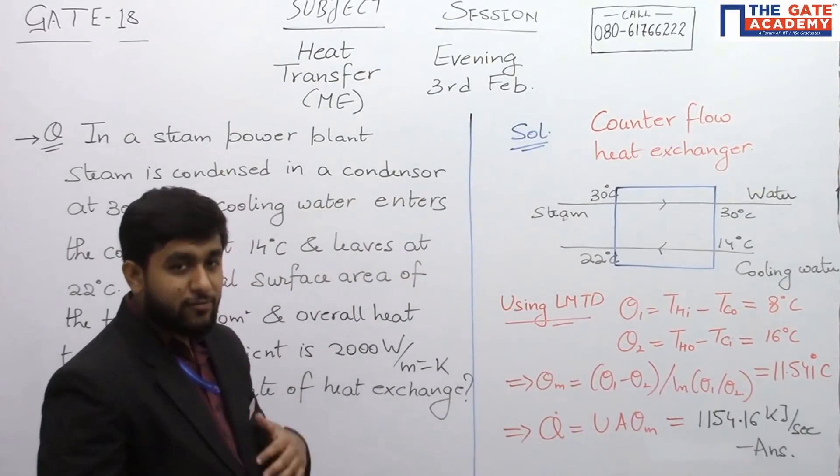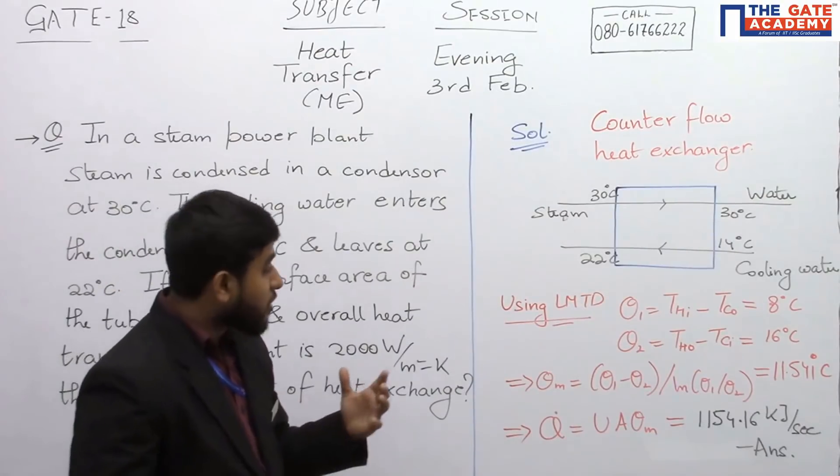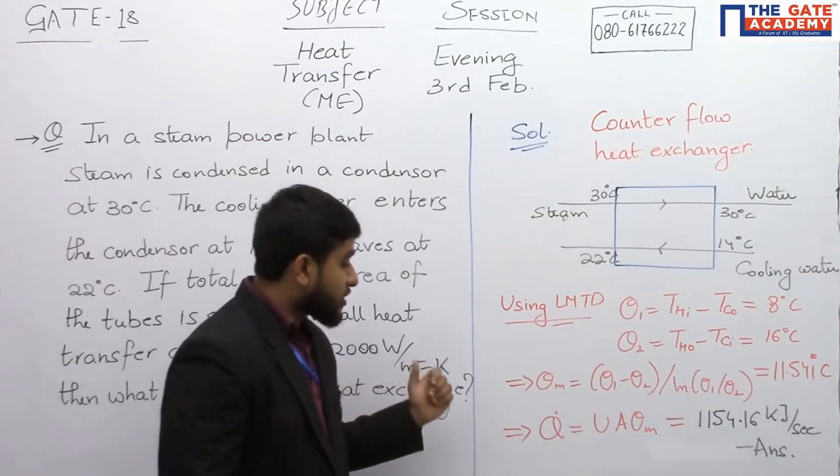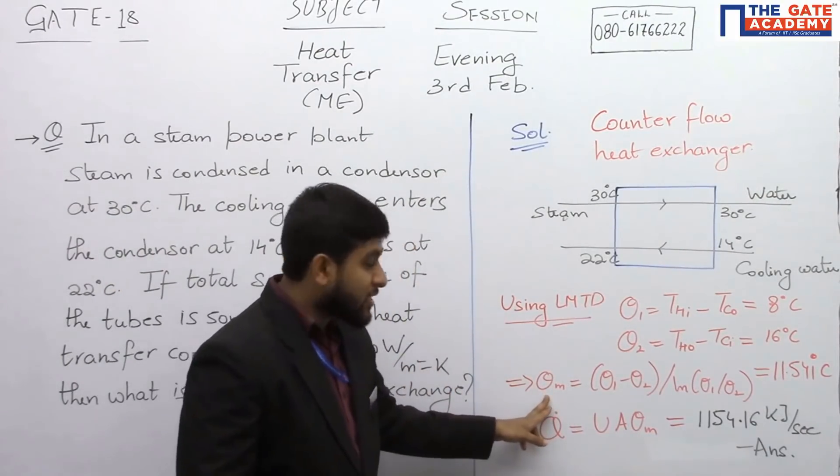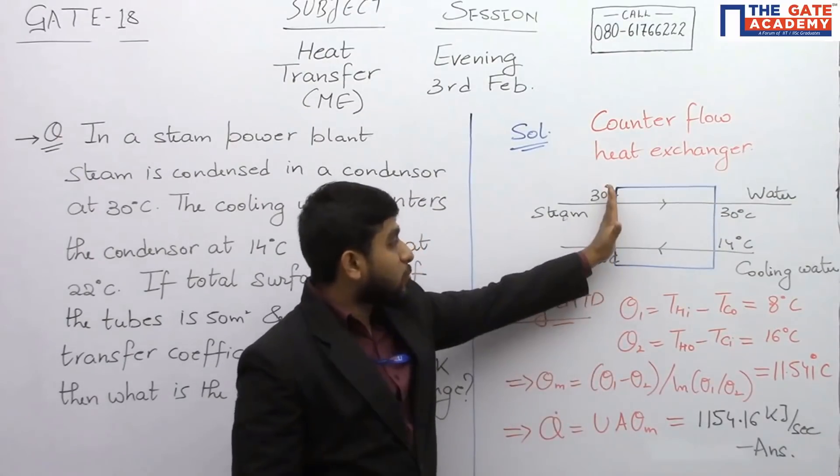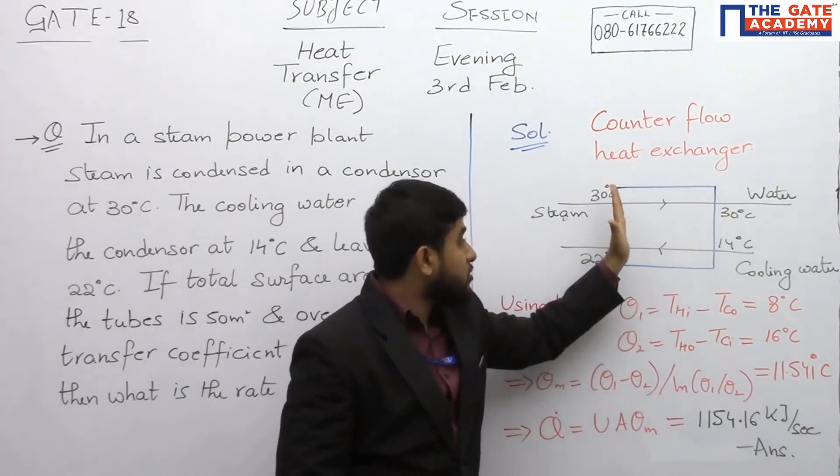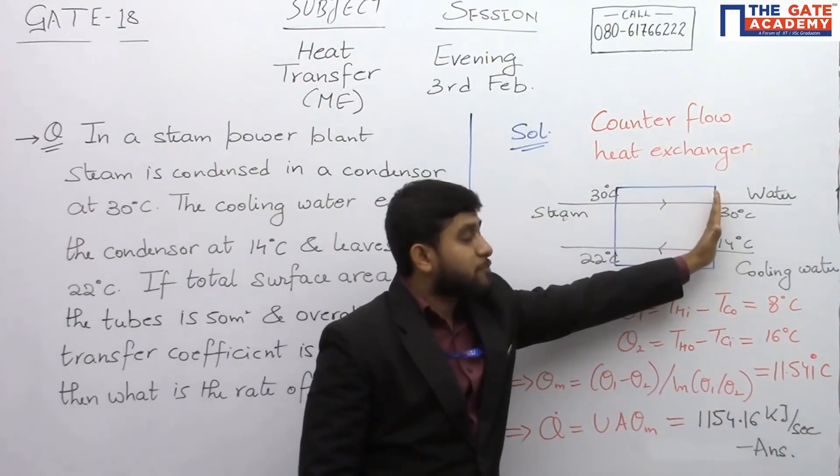Logarithmic mean temperature difference, which gives you the mean temperature difference of hot and cold fluid. What it says is that mean temperature difference is nothing but theta one minus theta two divided by log of the ratio of the two temperature differences.